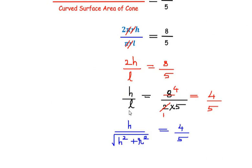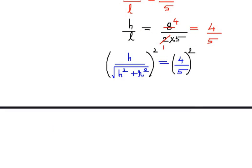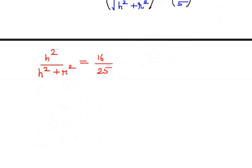We substitute l = √(h² + r²) into h/l = 4/5, giving h/√(h² + r²) = 4/5. Squaring both sides, we get h²/(h² + r²) = 16/25.